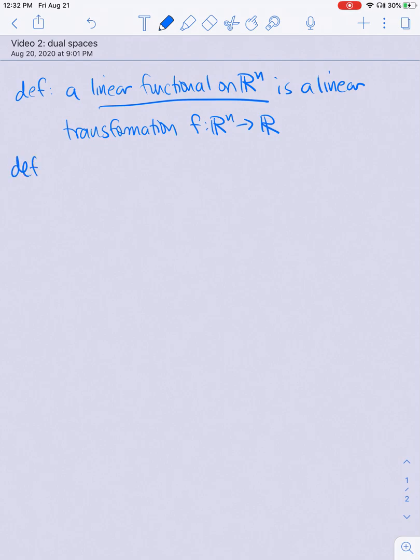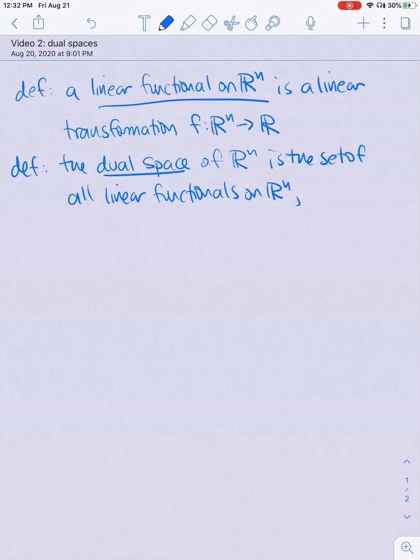The dual space of Rⁿ is the set of all linear functionals on Rⁿ, and it's denoted Rⁿ star.